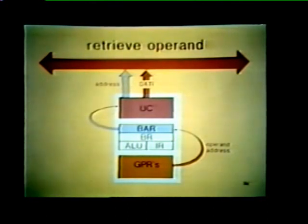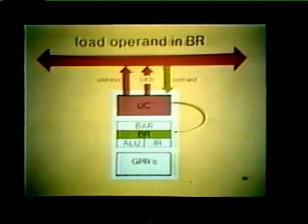What happens if the operand is stored externally in some bus device? For example, if the operand address is stored in a GPR, the operand itself is stored outside the processor in some external location, such as memory or an IO device register. Before executing the instruction, the processor must retrieve this operand by performing a data I bus cycle. The processor takes the operand address from a GPR and loads it into the BAR. The unibus control places this address on the bus, initiates a data I bus cycle, and the addressed bus device places the operand on the bus. The unibus control then loads this operand into the processor's buffer register, or BR.